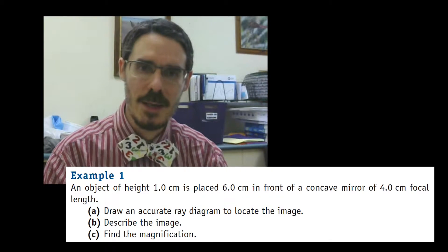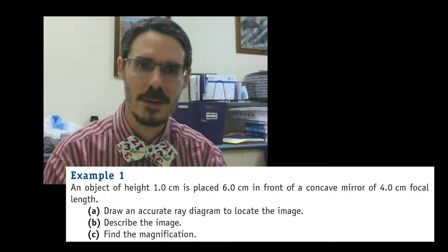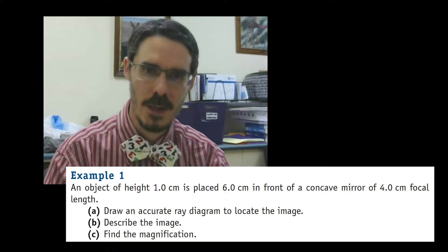An object of height 1cm is placed 6cm in front of a concave mirror of 4cm focal length. Draw an accurate ray diagram, describe the image and calculate magnification.